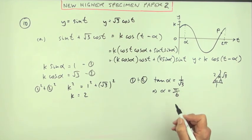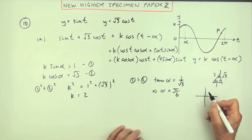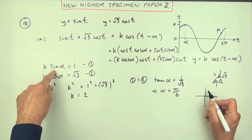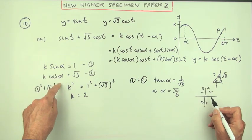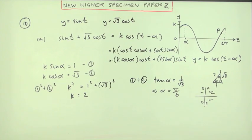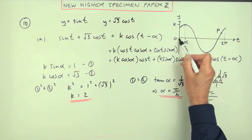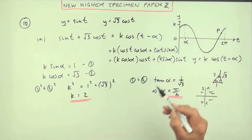I might have seemed a bit hasty doing that because I should have justified that by saying, well, what's happening here? The sine is positive, all sine tan cos. The cosine is positive, so it is indeed in the first quadrant. I suppose this graph itself showed you that alpha was just a small amount forward.